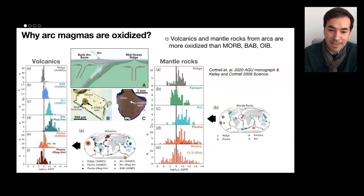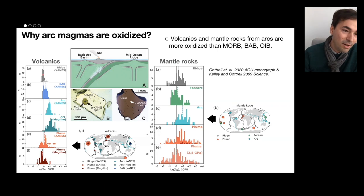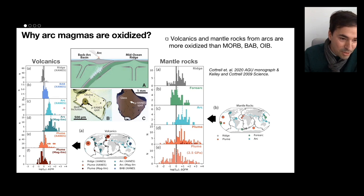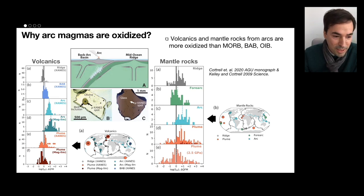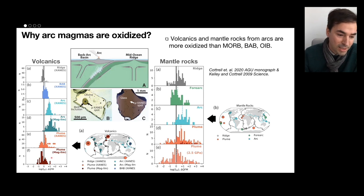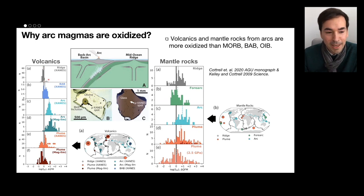This is something I've been seeing already for a while. If we look at volcanics and mantle rocks from arcs — here in this compilation from Kotl recently in 2020 — we see that independently of the method we use, either zircons, spinels, or using classical oxybarometry, the oxygen fugacity conditions they are recording are significantly high, at least one log unit higher than what we assume for MORBs. And this is true apparently all over the world, so it seems to be a quite consistent observation.